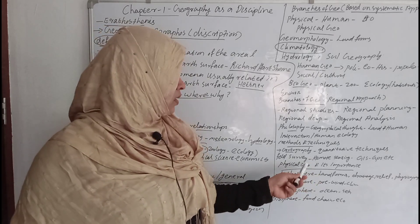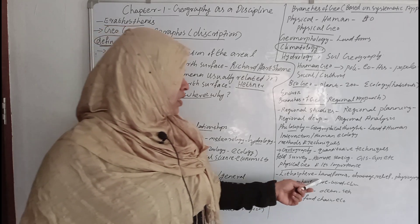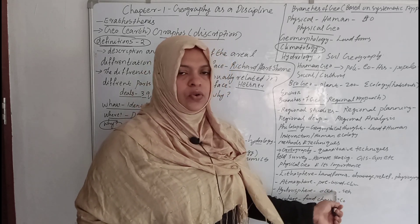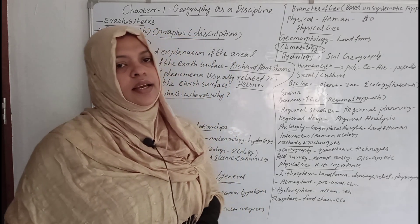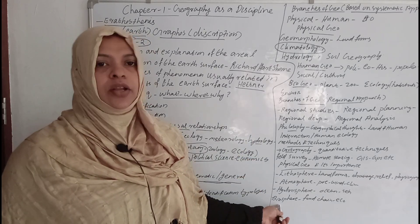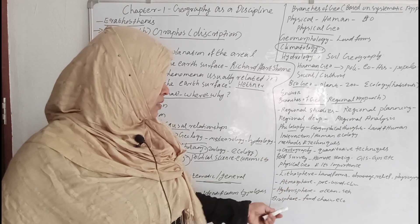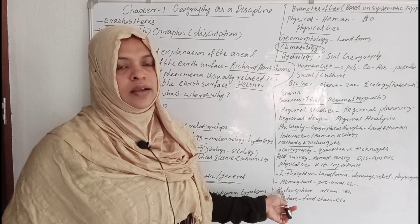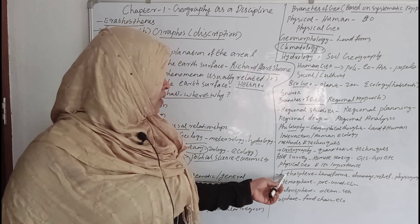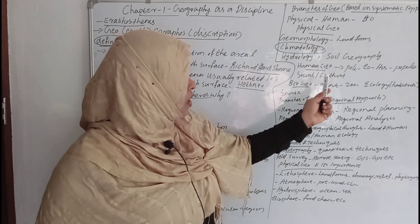Physical Geography and its importance recap: Lithosphere — landforms, drainage, relief. Atmosphere — pressure, wind, and climate. Hydrosphere — ocean, sea. Biosphere — food chain. Biogeography relates to biology, plant, botany, and zoology. Atmosphere relates to climate and geomorphology, landforms. These are the key components of Physical Geography.